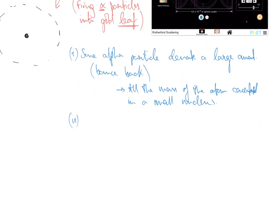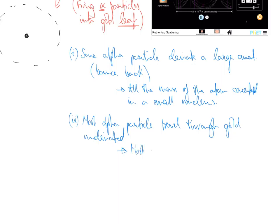What else do we have? Number two. We have most alpha particles travel through gold undeviated. So, what does that imply? That suggests that most of the atom is empty space.